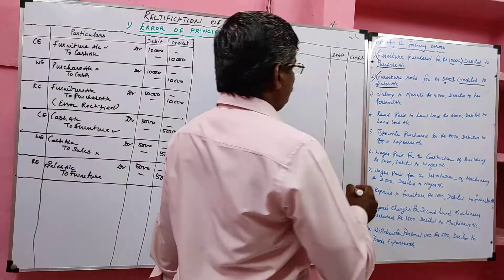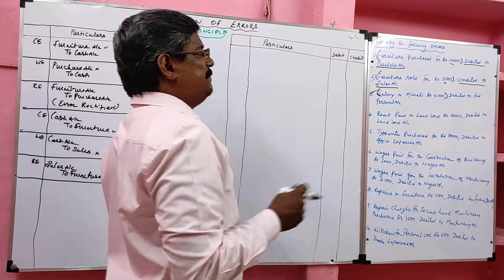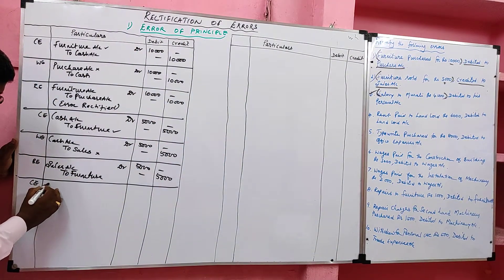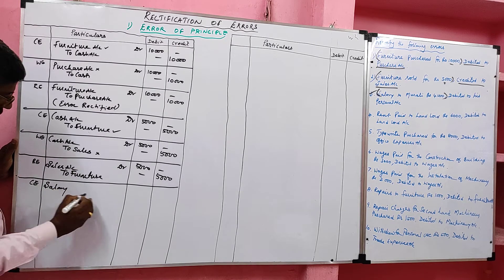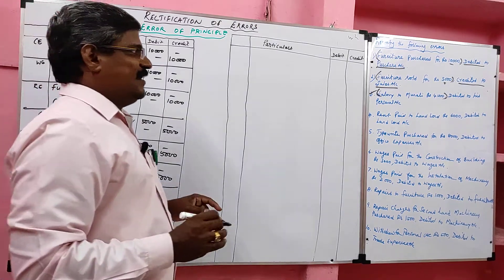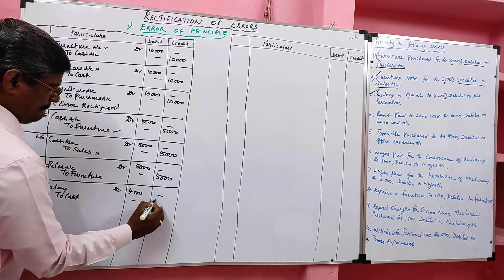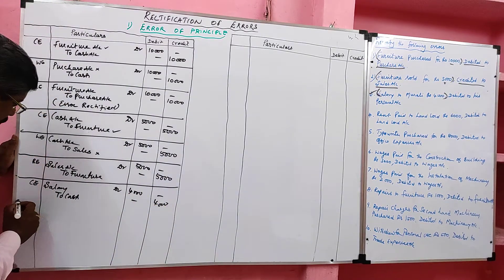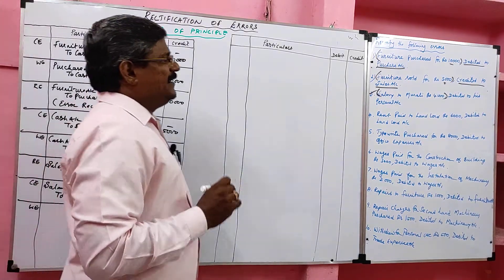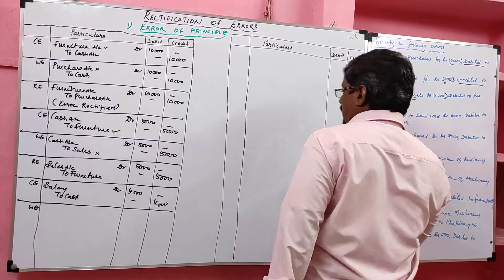Problem 3: Salary paid to Moraly, rupees 4,000. When we pay salary, the correct entry is: salary account debit to cash, how much — 4,000. Now the wrong entry: they debited Moraly's personal account instead of salary account.